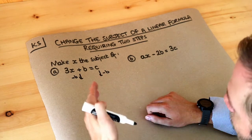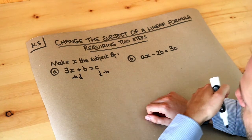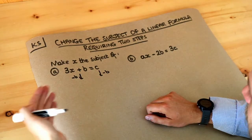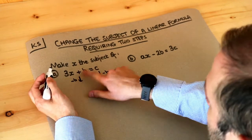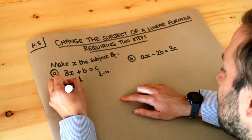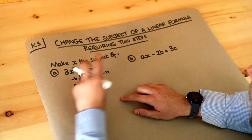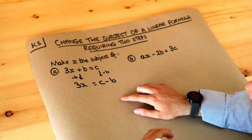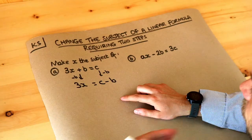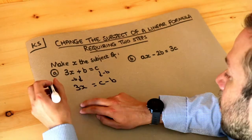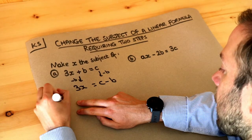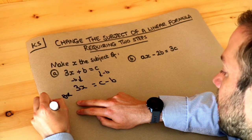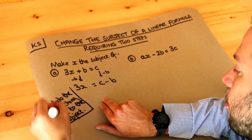It's a bit like if I had 5 plus 3 minus 3 — the plus 3 and the minus 3 cancel each other out and you just get 5. So the minus b and plus b disappear leaving 3x. And then on the right hand side you just write c minus b. And again we undo the last thing we've done to x — that's the key point here: undo the last thing done to the subject.